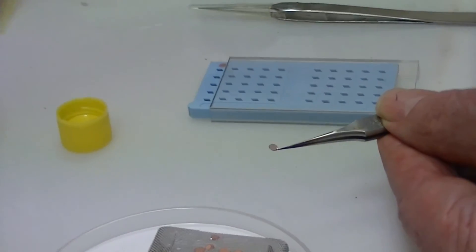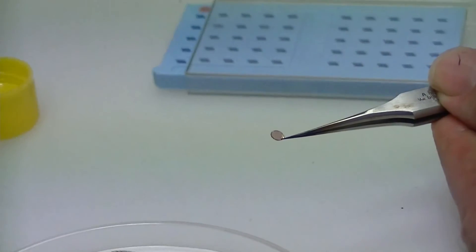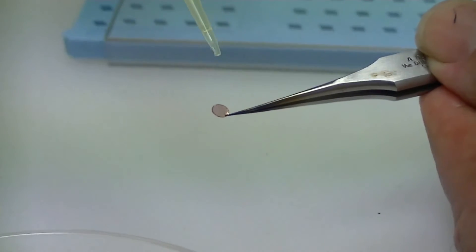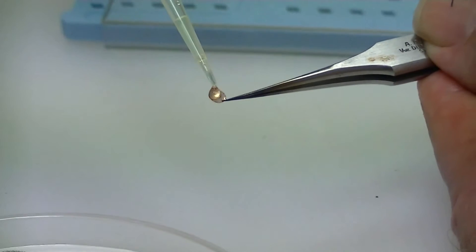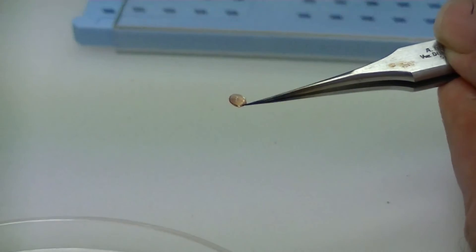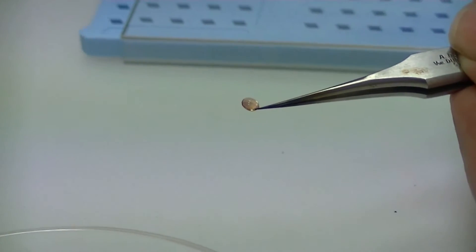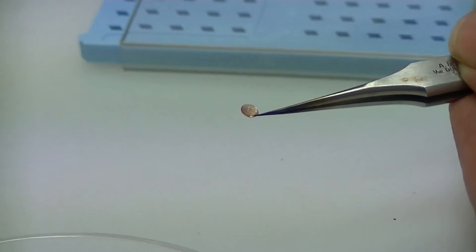So we then put some stain on the grid, leave it for 10 seconds, no longer, and then drain that off.